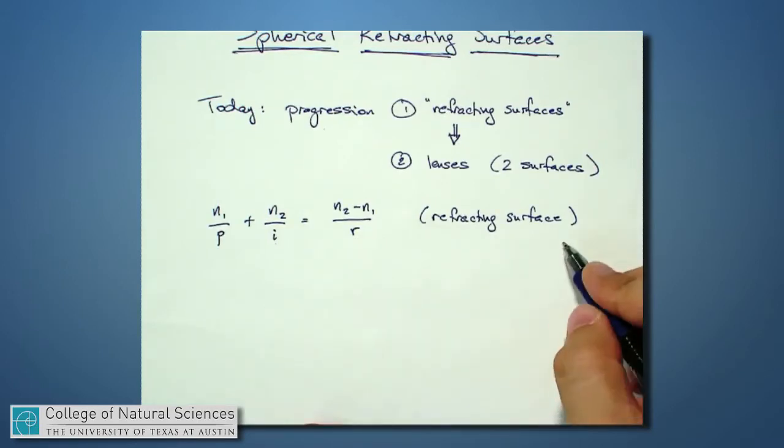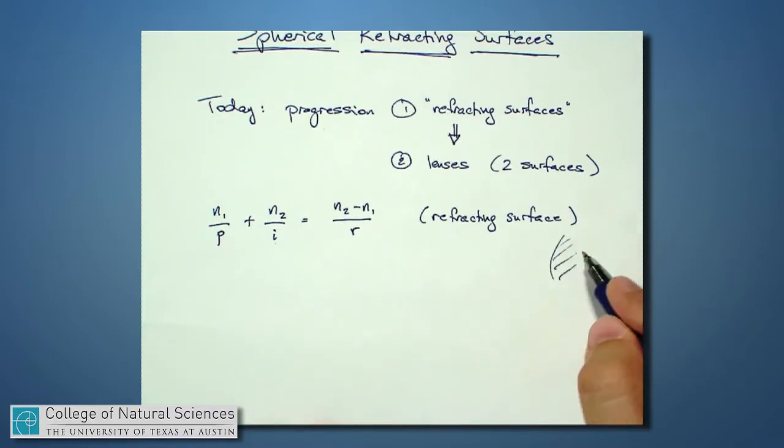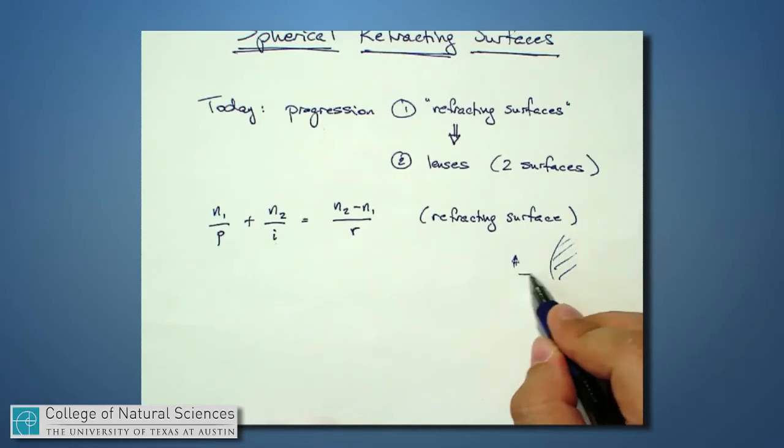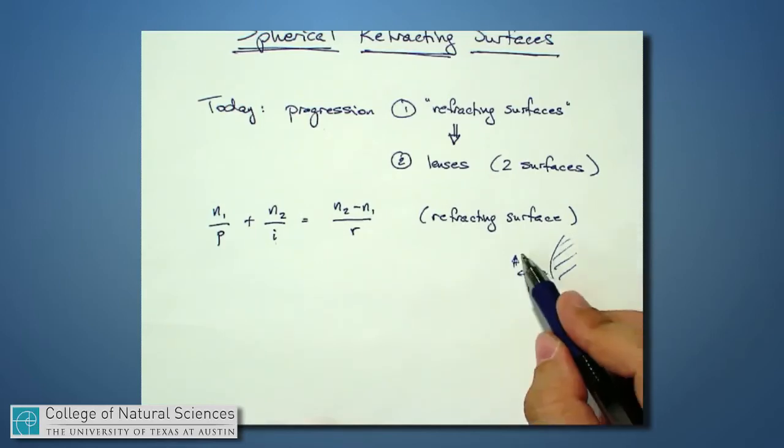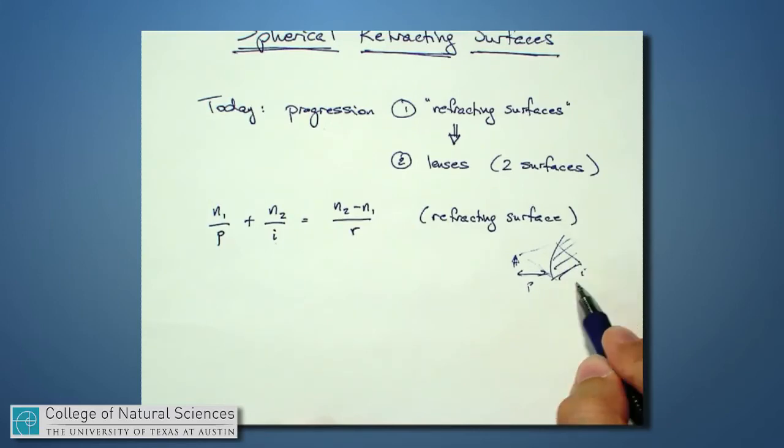So I might have some ball here, some little object located distance p, and the light is refracting, and it creates an image over here. So the radius of curvature of that spherical surface,